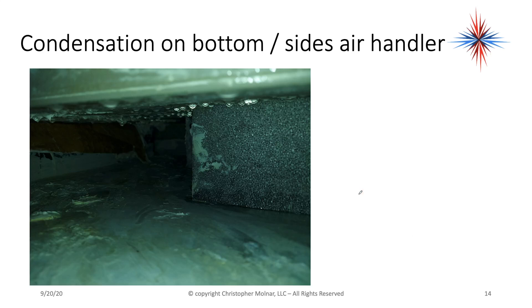Another thing you can look at as you look at air flow: if you see condensation on the bottom or the sides of the air handler. This is an air handler where it's actually dripping water, and it's not because it's leaking. Condensation on the bottom or sides of the air handler is a typical sign of low air flow. Think about a glass of ice water sitting on a kitchen counter in a humid room and how much condensation occurs on the outside of the glass. If I have an air handler that's too cold because of lack of air flow, no matter how much insulation is in that air handler, I'm going to get condensation if it's in a humid environment — for example, in an attic in Florida or a garage in Florida.